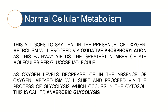This all goes to say that in the presence of oxygen, metabolism will proceed via oxidative phosphorylation, as this pathway yields the greatest number of ATP molecules per glucose molecule. As oxygen levels decrease or in the absence of oxygen, metabolism will then shift and proceed via the process of glycolysis, which occurs in the cytosol of the cell — this is called anaerobic glycolysis. That's important to keep in mind when we look at the Warburg effect.